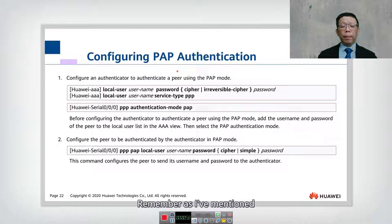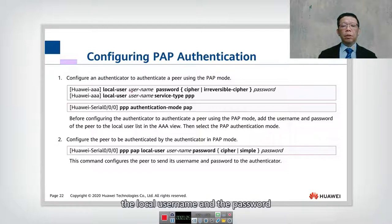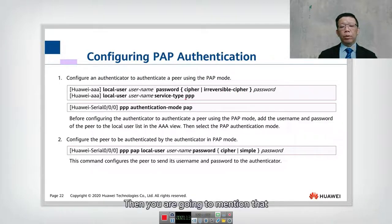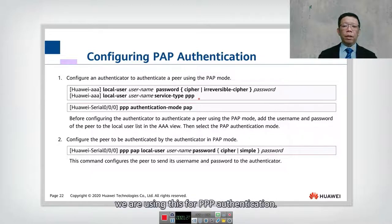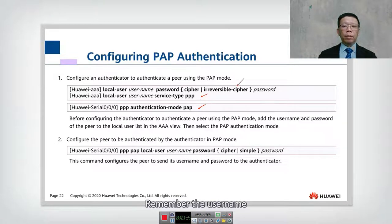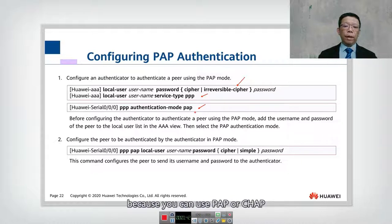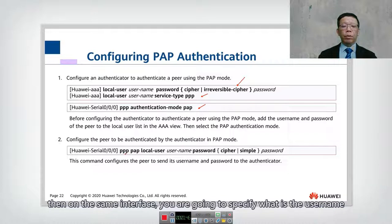We can configure PPP authentication — this is an optional command. Before you do that on the peer, you need to configure the local username and password, followed by whether you want to use a cipher or irreversible cipher password. You also specify that this username is for PPP use. We learned earlier that service types can be FTP, Telnet, or SSH, but here we use it for PPP authentication. The keyword is 'PPP authentication mode PAP'. The username must be pre-configured. On the serial interface, you configure PAP or CHAP, then specify the username and password.